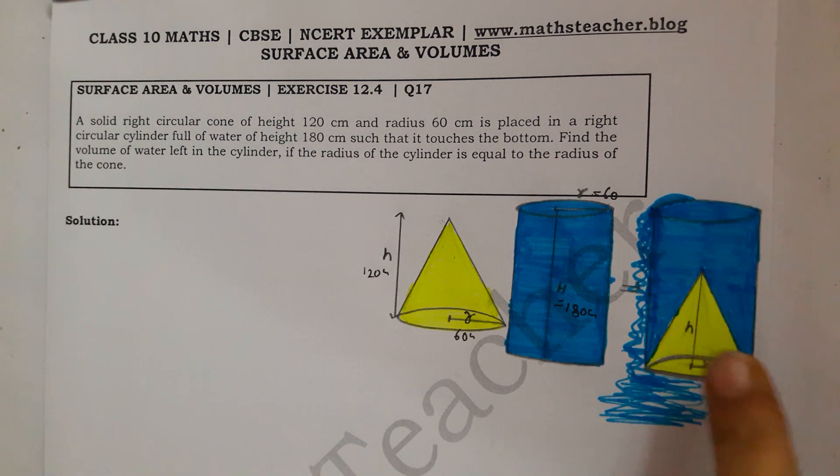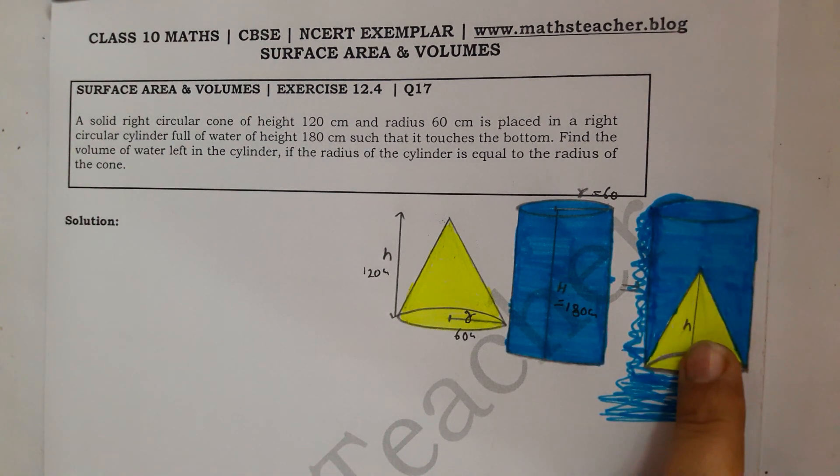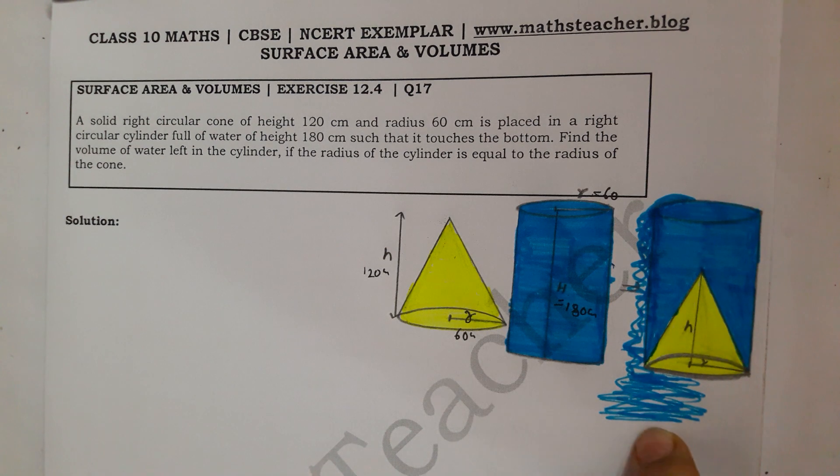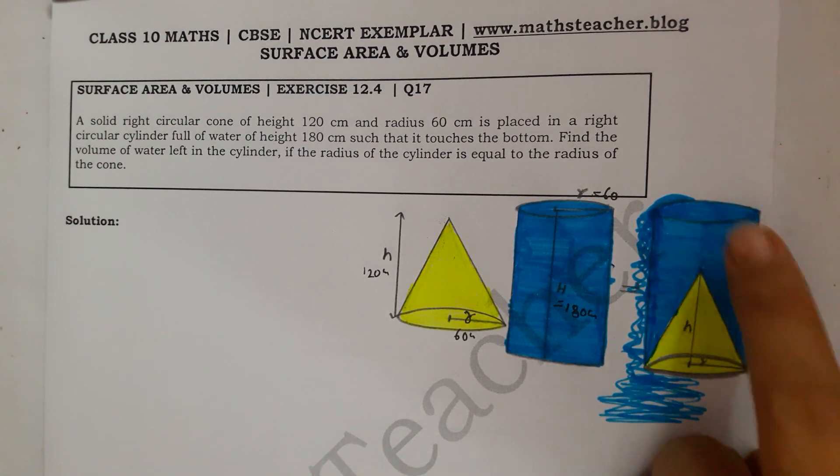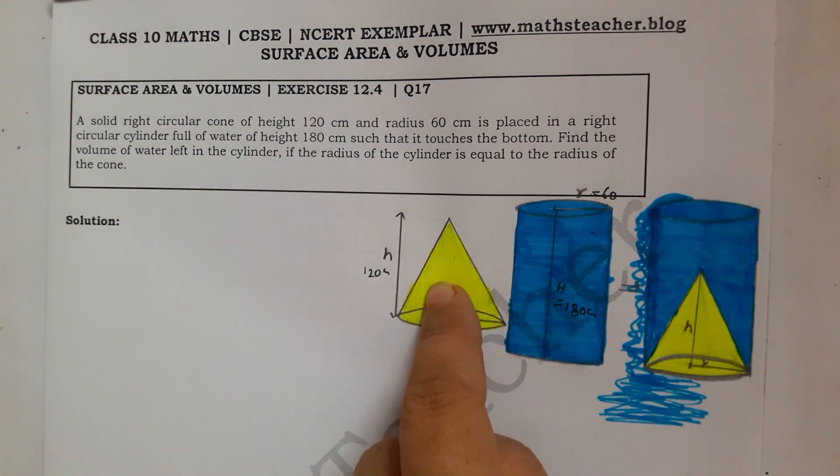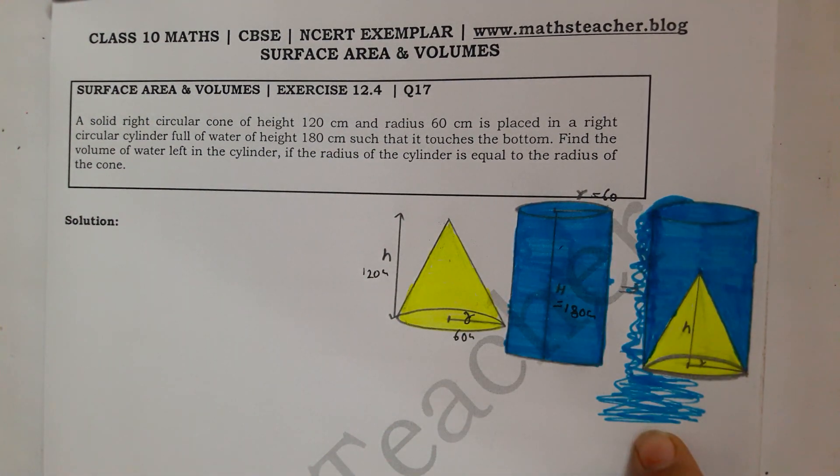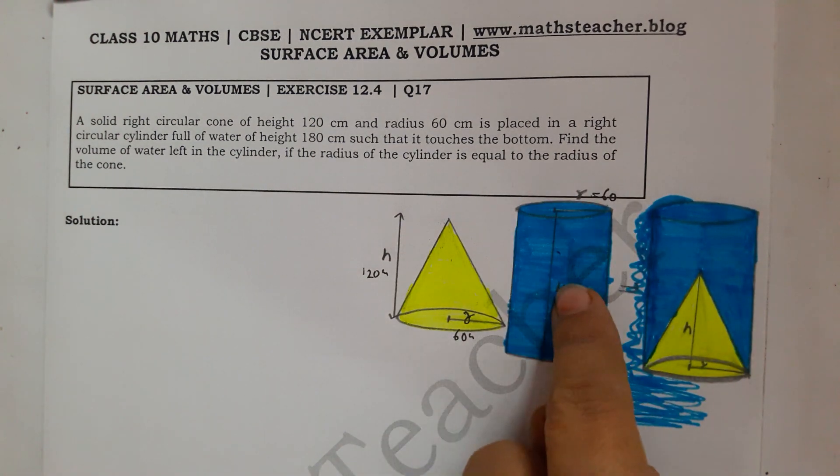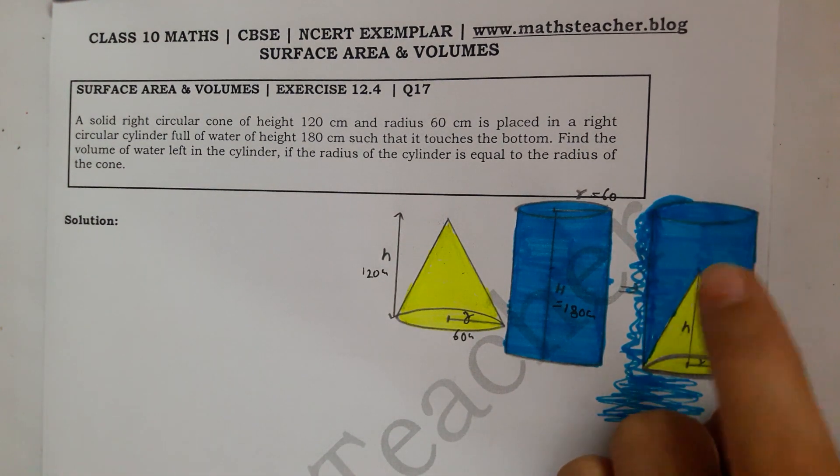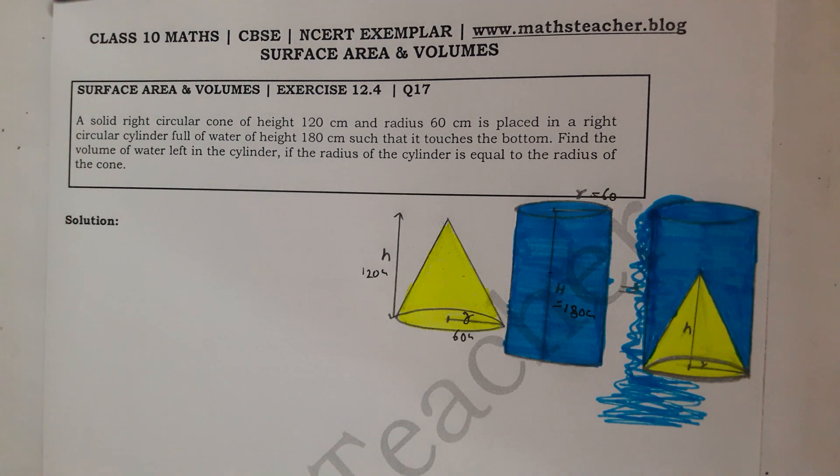So this is a rule of physics. If you put any object in the water, the water will come out. The volume of water that comes out equals the volume of the cone. So from the whole water, if you subtract the volume of the cone, that amount of water will be left in the cylinder.